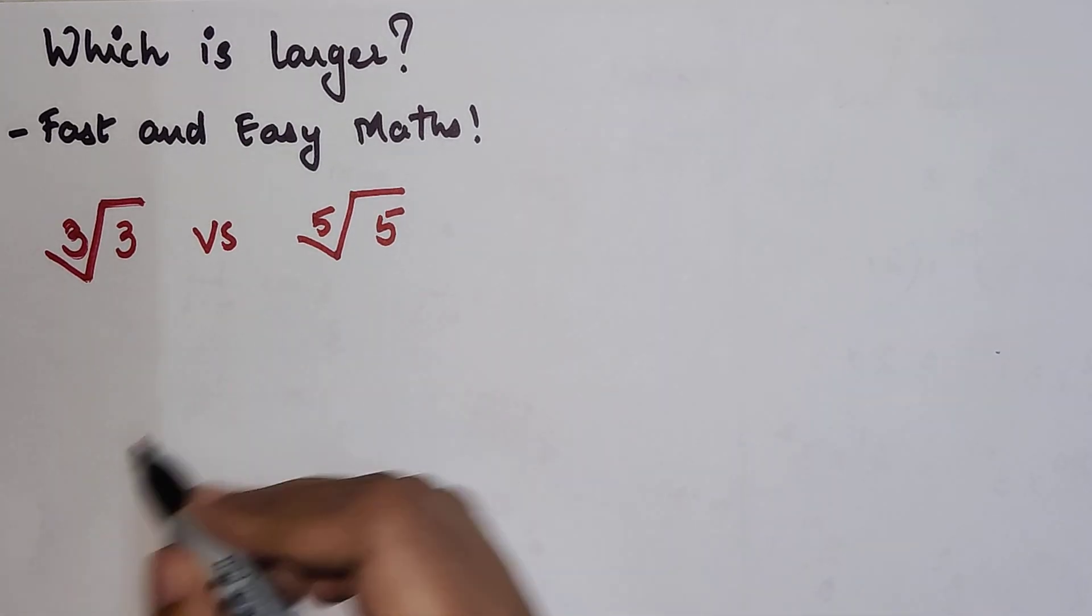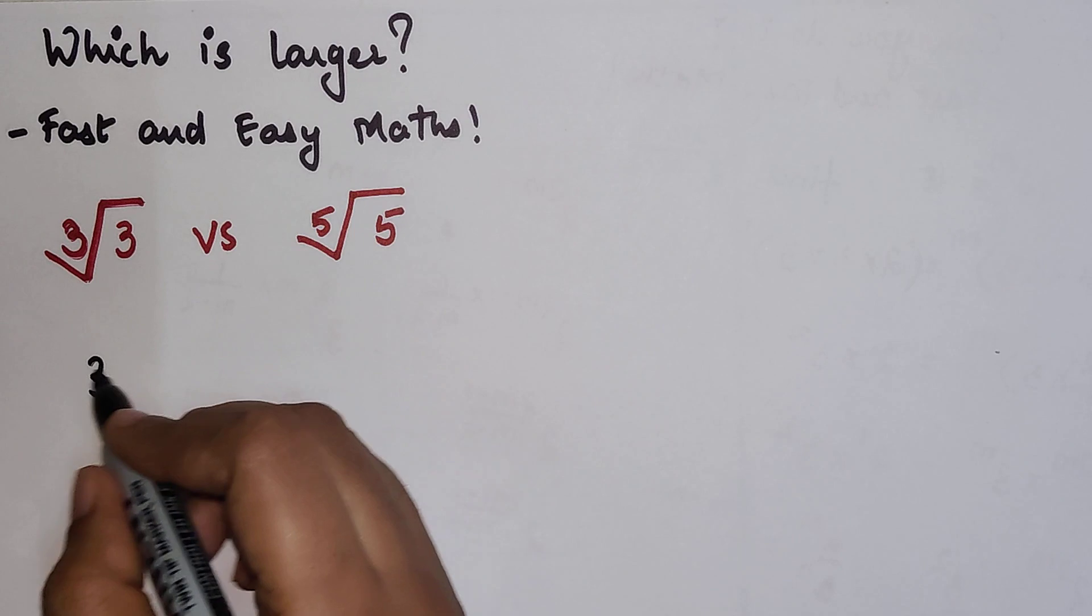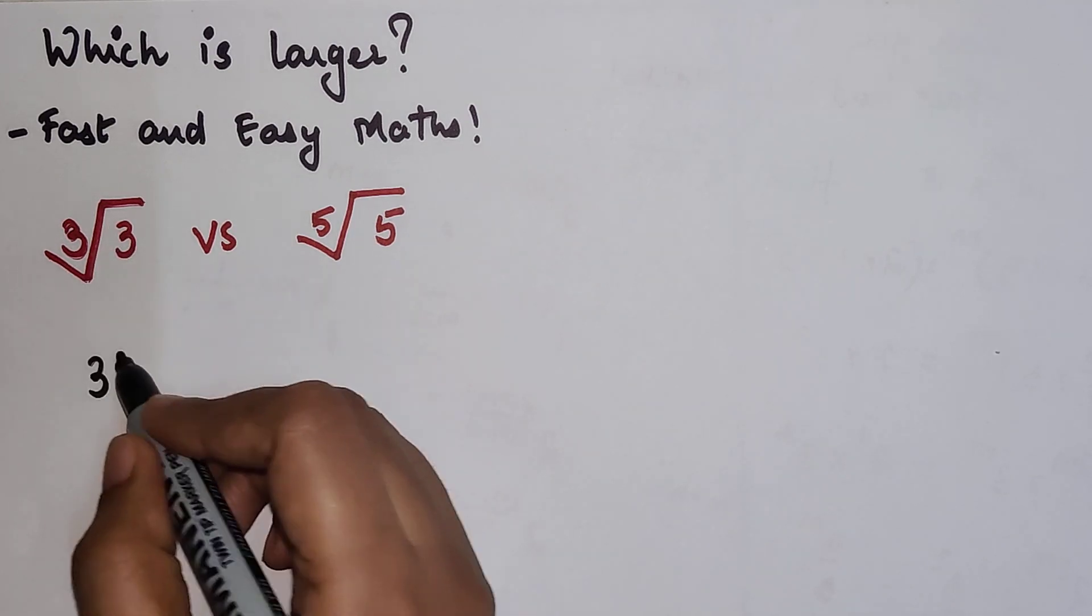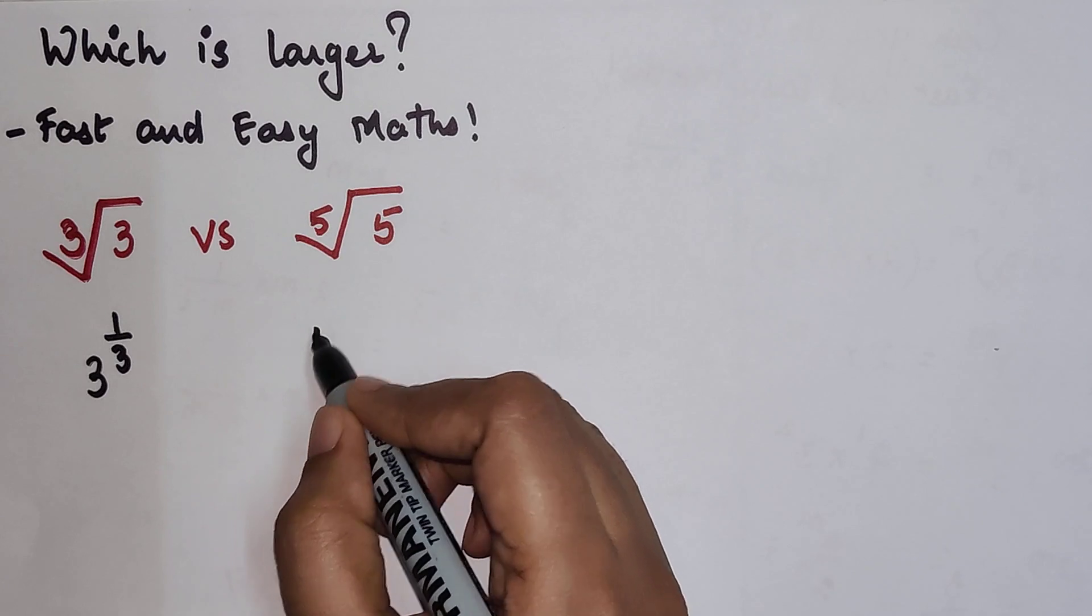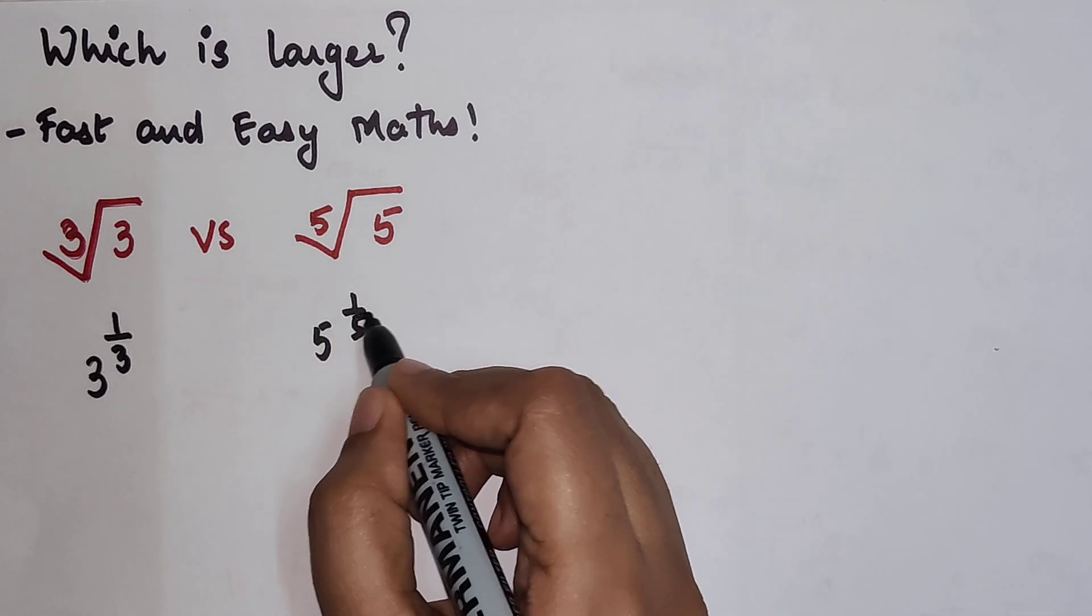Whenever you come across something like this, you first write this cube root in terms of an exponent. So that becomes 3 raised to 1 upon 3, and this becomes 5 raised to 1 upon 5.